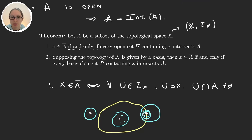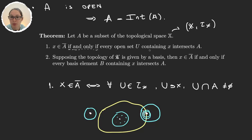The second property is very trivial once we know the first one. It says that if the topology of X is given by a basis, then x is in the closure of A if and only if every basis element containing x intersects A. This follows from the first property because any open set U is a union of basis elements, and every basis element is itself open.